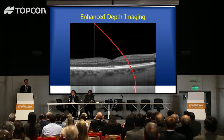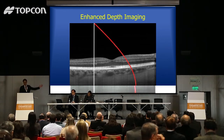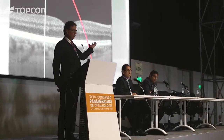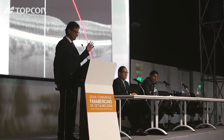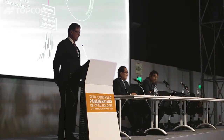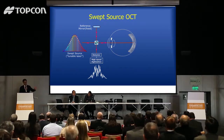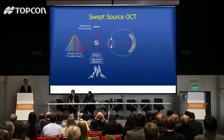With spectral domain OCT, we have to make a choice: we either look at the vitreous and retina, or we look at the choroid. We can't easily look at both simultaneously. With swept source OCT, individual wavelengths are sent into the eye sequentially, making an interferogram detected by a photodiode — a much faster detection method. The interferogram is built up and decoded by the same Fourier transform idea to make an A-scan.